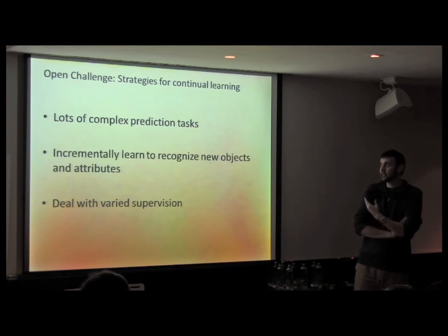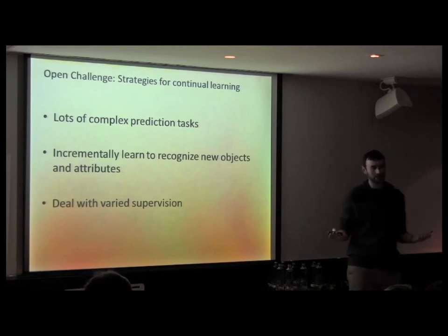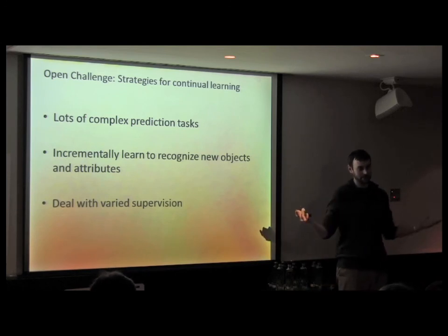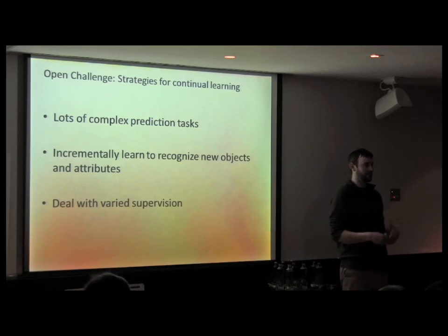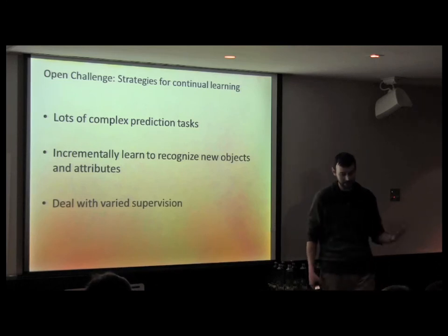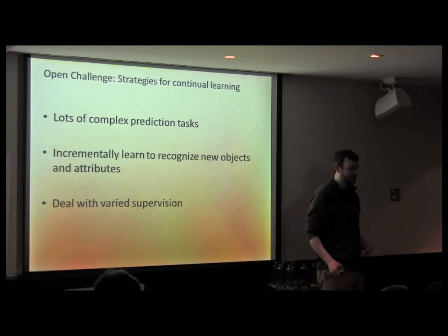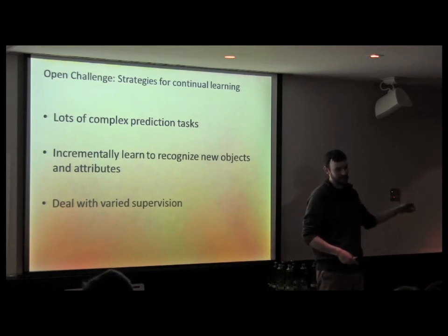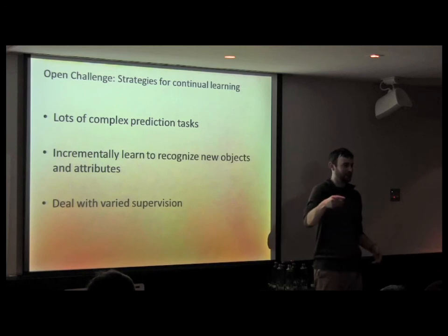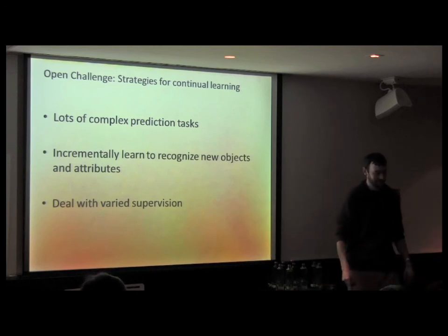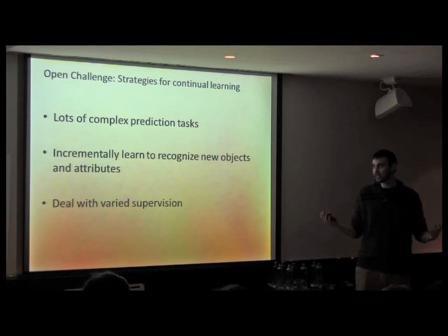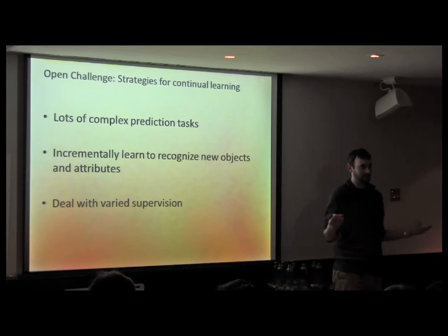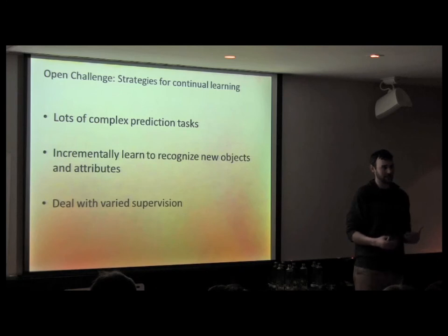Another big need is more lightweight strategies for continual learning. The recognition problem is really hard — it takes people many years to recognize most objects around us. A two-year-old will point to a deer and say 'dog,' or point to luggage and say 'vroom vroom,' thinking it's a car. There's a huge number of prediction tasks, so we really need very flexible machine learning frameworks that can continually build on what they already know, and we need good representations that enable that kind of learning.